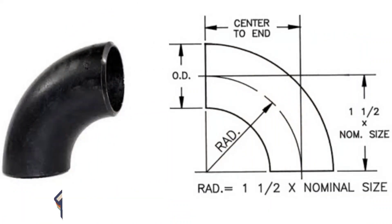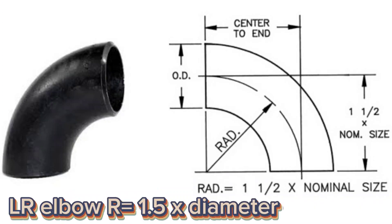Long radius elbows 1.5 XD is having the radius equivalent to 1.5 times the diameter of the pipe. So, LR elbow radius equals 1.5 X diameter of pipe.